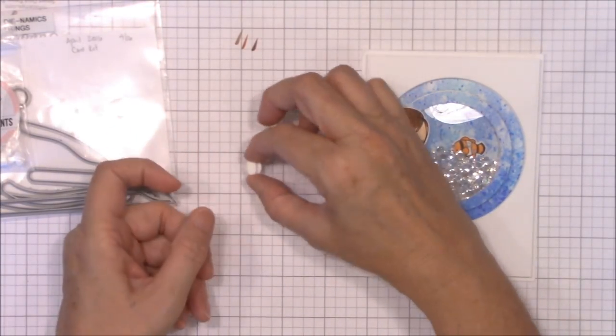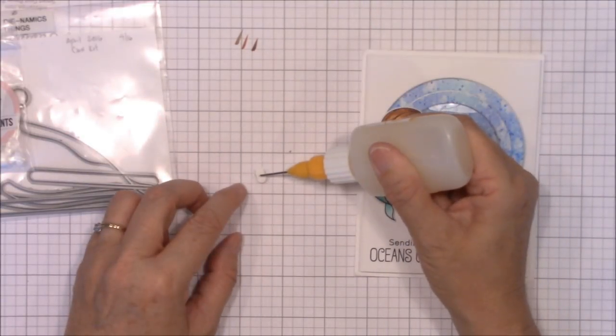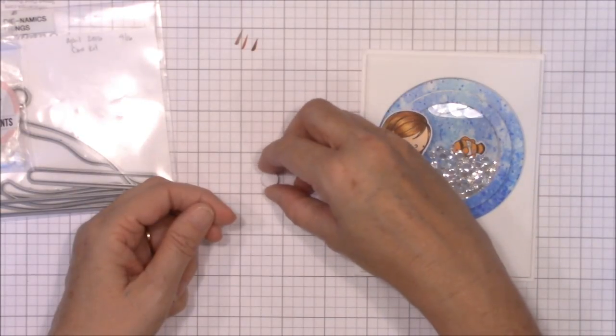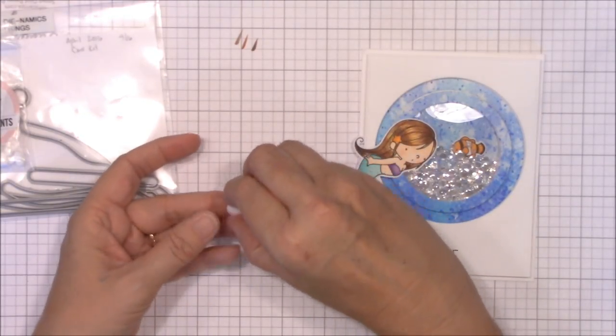Once it's set, place another drop of glossy accents on top of the slider element and add the second circle. Again, hold it together with your fingers for a few seconds to allow the glue to fully set.